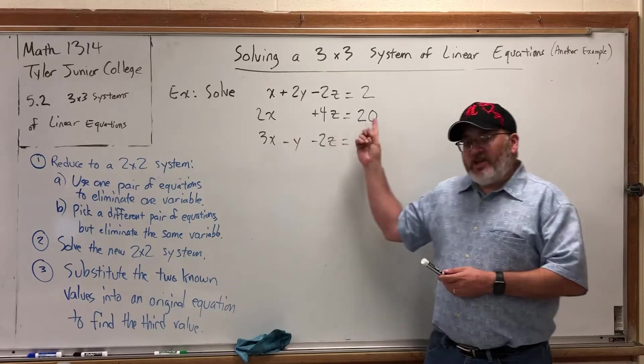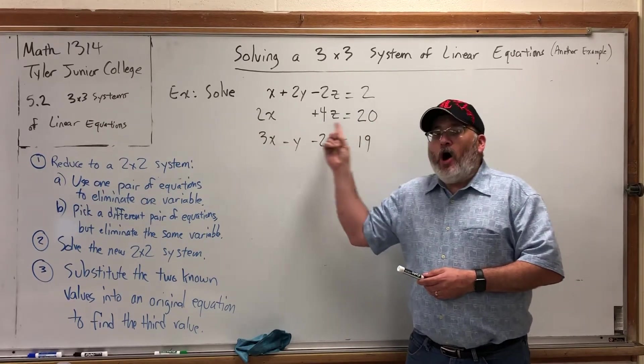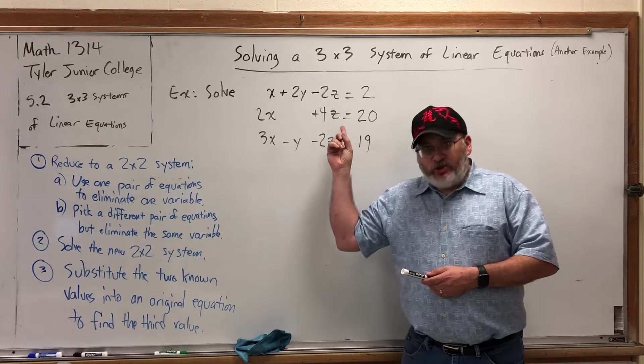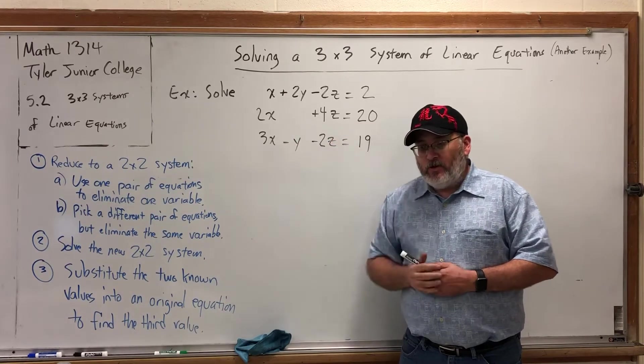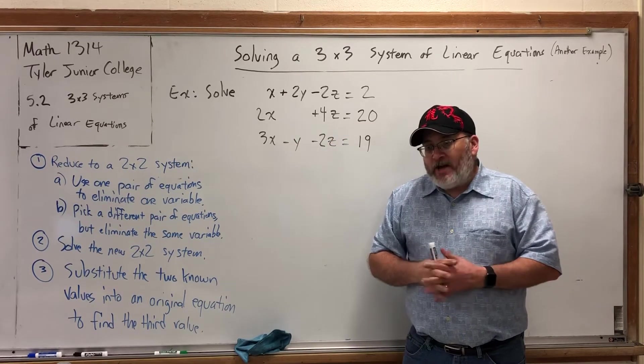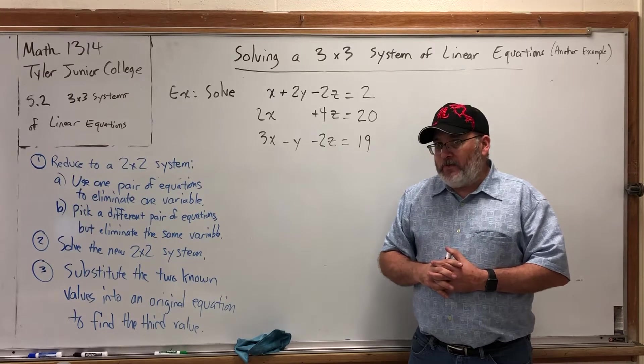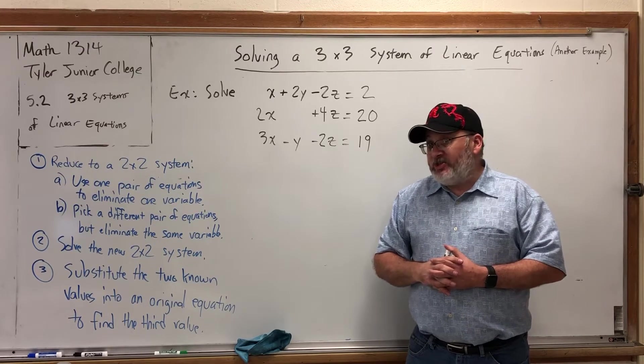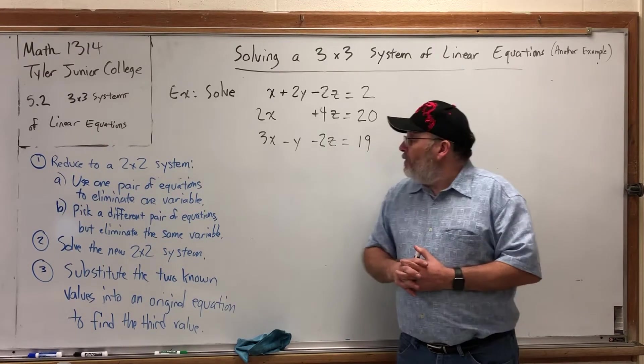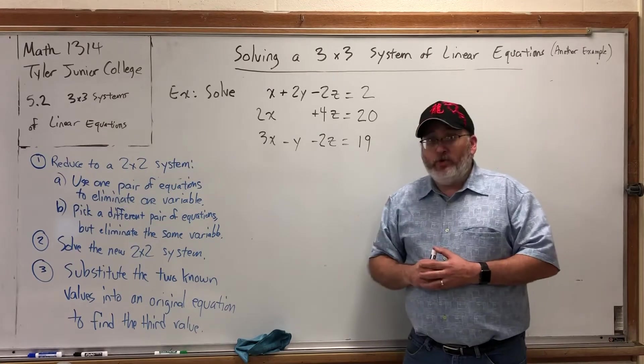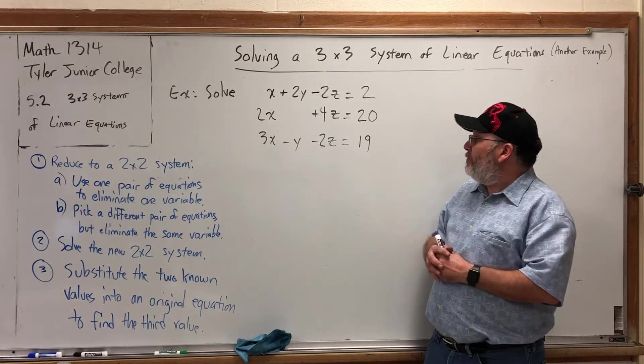For example, this second equation already has just two variables. So, why don't I make a 2x2 system that has only x's and z's? Now, don't get me wrong. You can eliminate any variable you want twice.